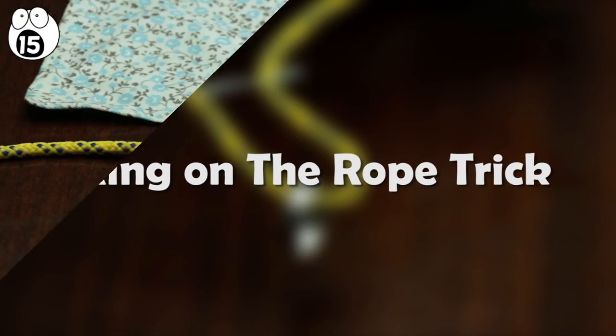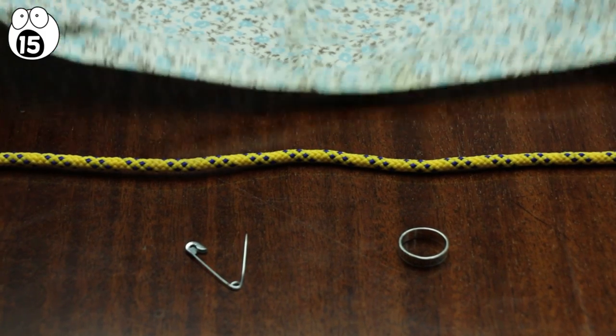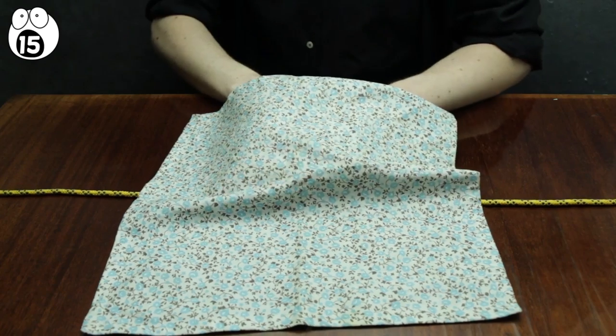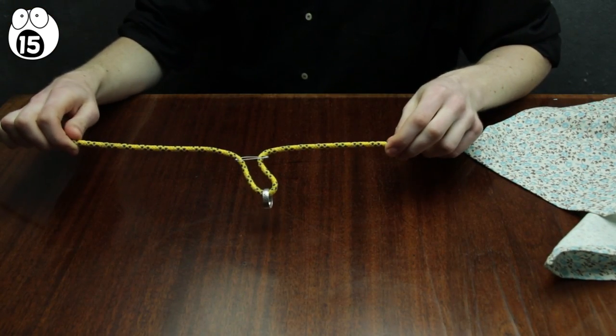Number 15, ring on the rope trick. Here's a safety pin, a piece of cloth, a ring, and some string. Placing the cloth over the other items and fidgeting around for a short amount of time, the ring can be inserted over the string. Seem impossible? Here's how it's done.